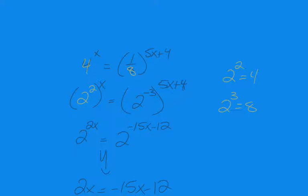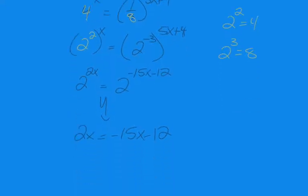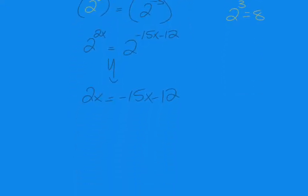And let's move this stuff around. And so, what I'll have then is I'm just going to solve this linear equation for x. So, let's add 15 to both sides to get 17x equals negative 12. Divide both sides by 17 to get negative 12 seventeenths.